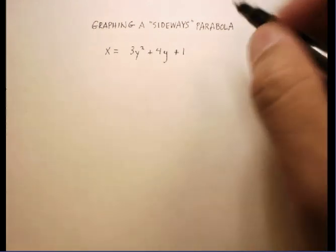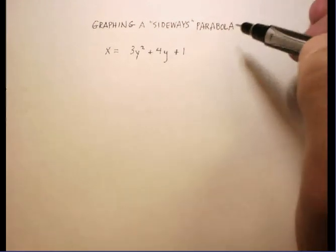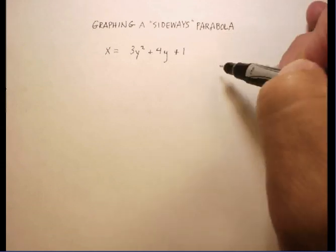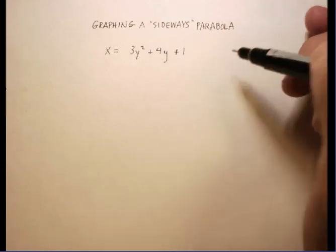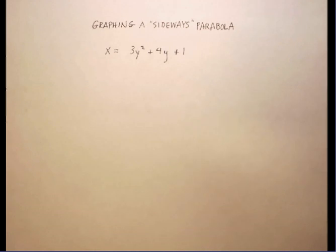Okay, this demonstration is going to be about graphing what I call a sideways parabola, a parabola that opens up to the left or that opens up to the right along the x-axis. Now, what's the clue that that's going to happen?